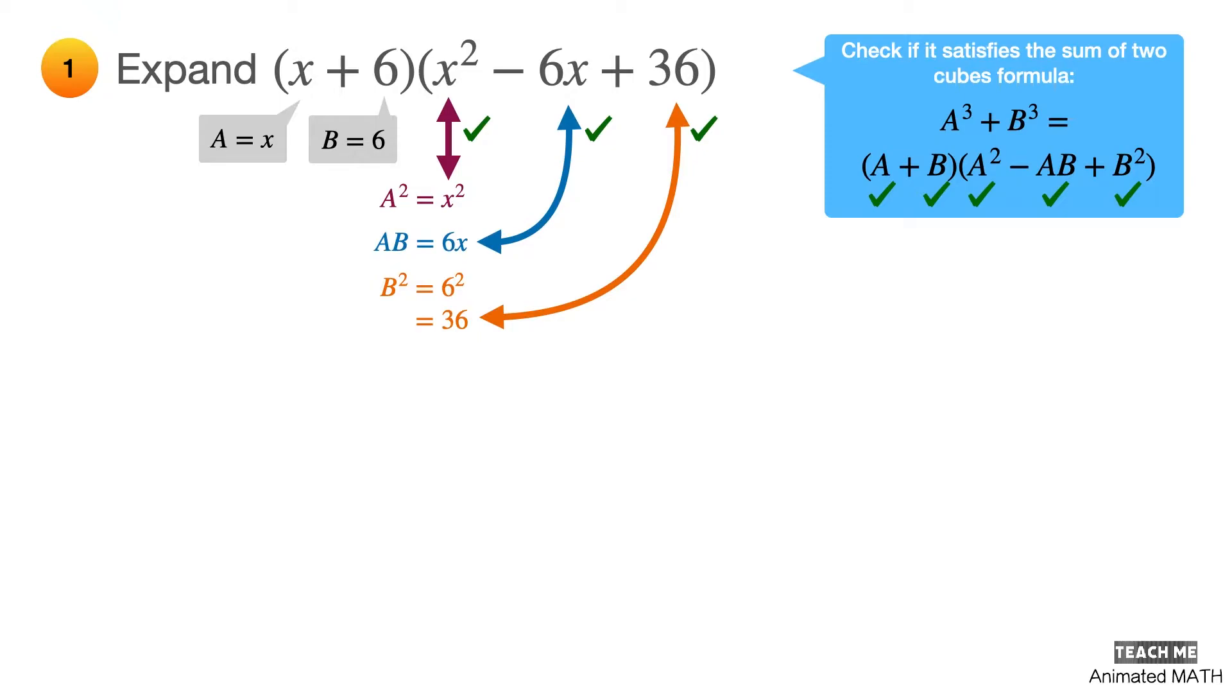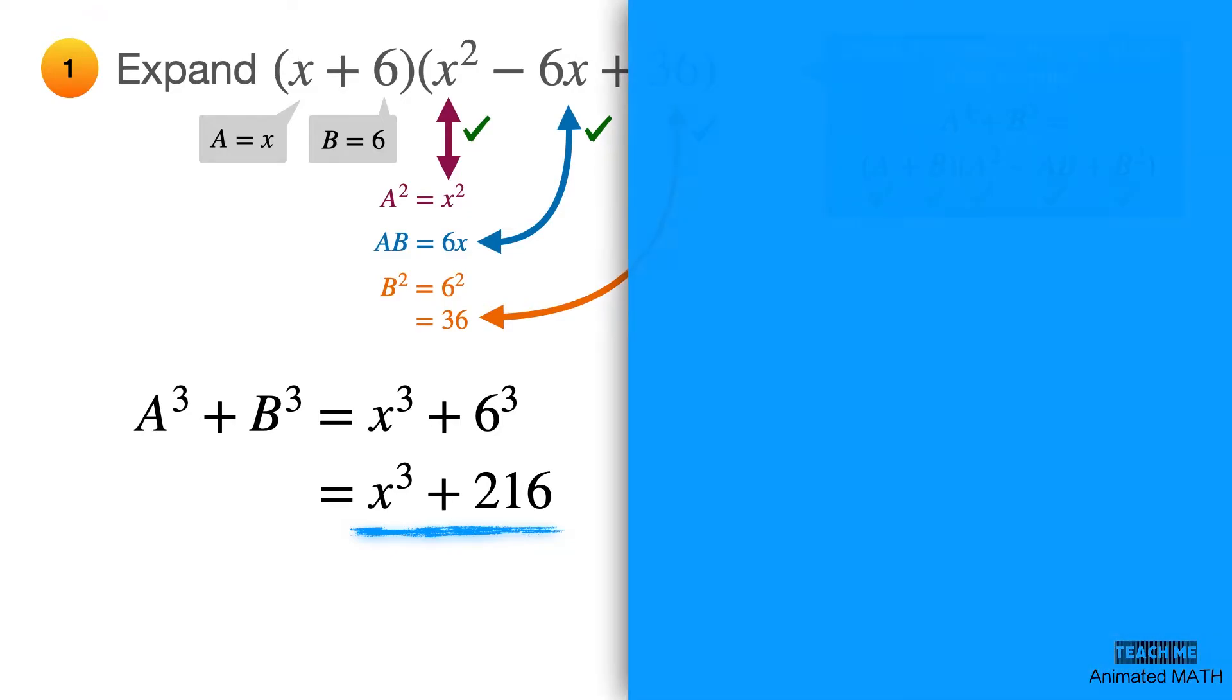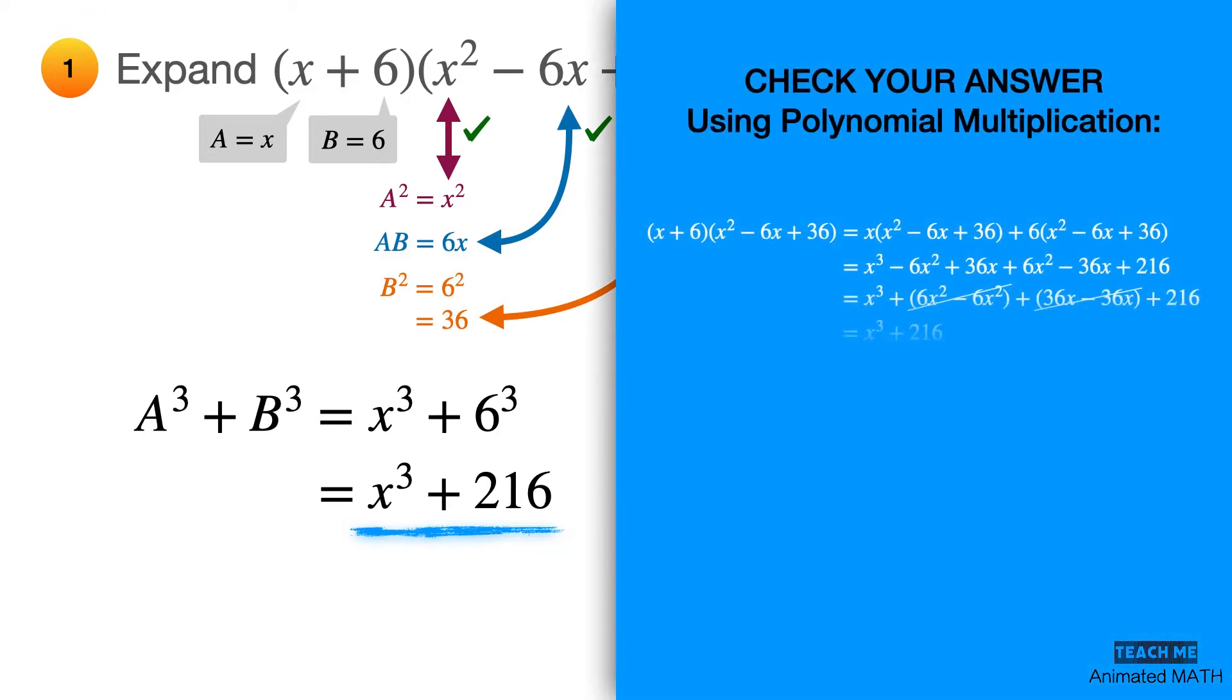Now compute for a cubed plus b cubed by substituting x and 6. The final answer is x cubed plus 216. Check it using polynomial multiplication and you'll see that the final answer is the same. Amazing, right?